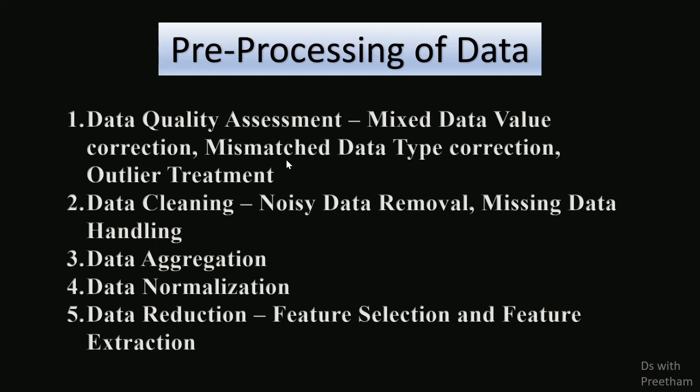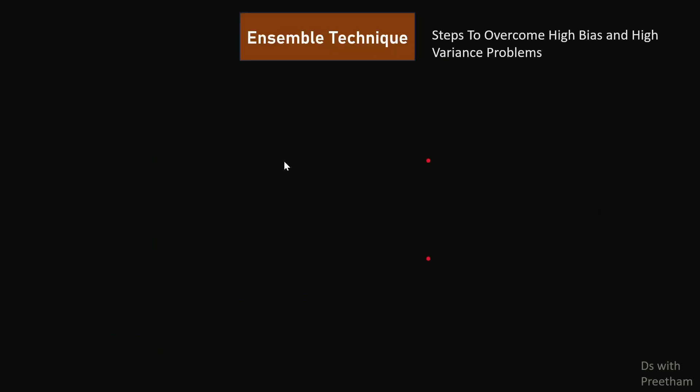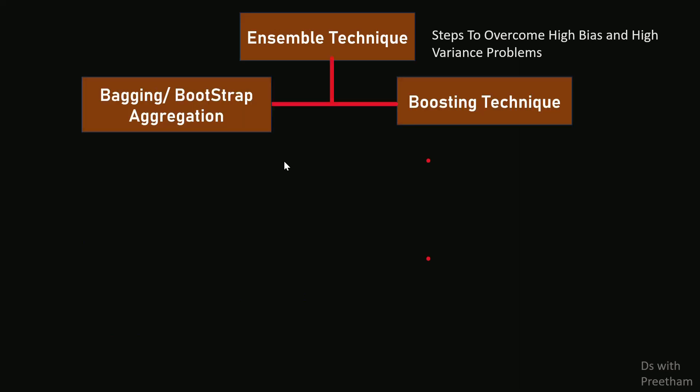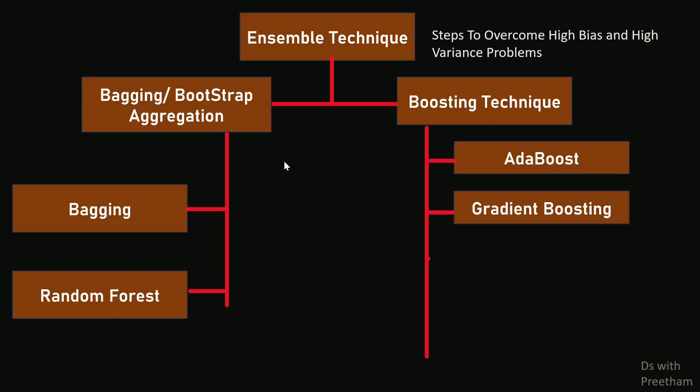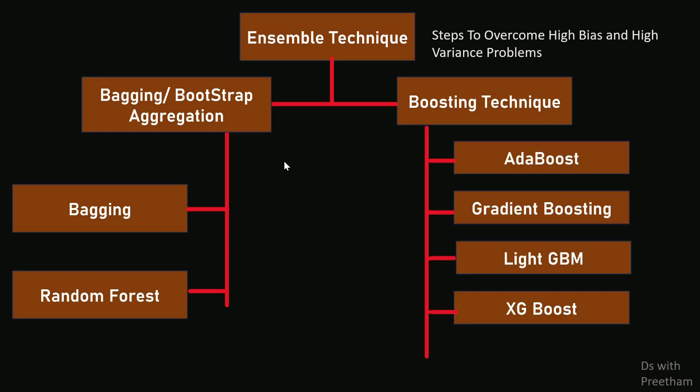All those pre-processing steps are applied. Now, consider the problem of high bias and high variance — the steps to overcome these problems include getting new data and using bagging and boosting techniques. Bagging includes random forests, and boosting includes AdaBoost, GradientBoost, LightGBM, XGBoost, and CatBoost. These are all techniques to overcome high bias and variance problems.